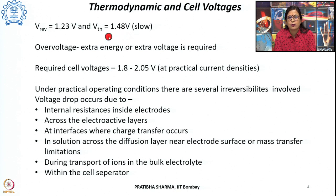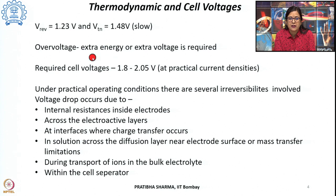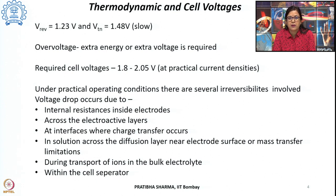Under the thermoneutral voltage, in actual conditions the process occurs at a very slow pace. This can be accelerated by applying extra energy or extra voltage, known as overvoltage. There are two reasons for this overvoltage: one is the low conductivity of water, which can be increased by adding salts, acids, or bases; and the other is the large activation energy barrier for splitting water, which can be addressed by appropriate selection of electrocatalysts.